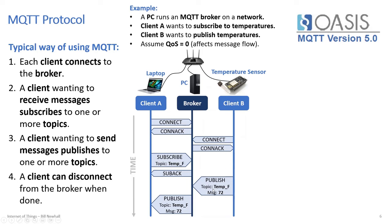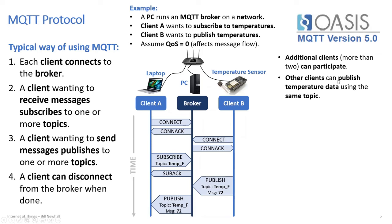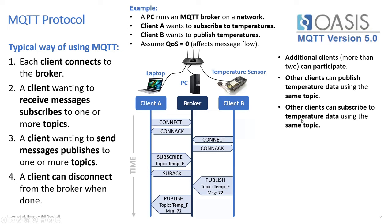More than two clients can participate. Other clients — Client C, Client D — could also be temperature sensors publishing to the same topic, and Client A will see all of those temperatures. Other clients can also subscribe to the same temperature data. You can see how we're avoiding point-to-point connections — everything goes through the broker, making it really easy to add subscribers and publishers.